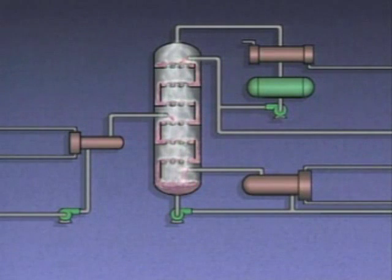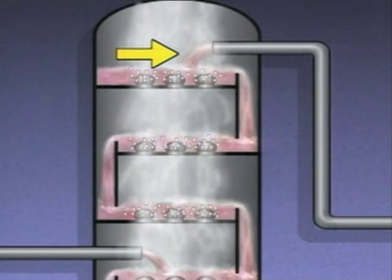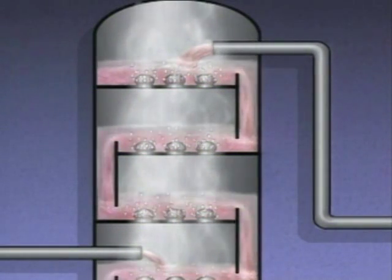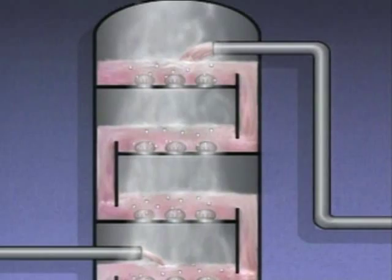While excessive liquid flow from a higher than normal feed rate is one cause of flooding, there are other causes. For example, a higher than normal reflux rate can have the same basic effect. Reflux is condensed overhead product that's pumped back to the top of a column. If there's too much reflux, the level of liquid on the trays can rise, increasing the hydrostatic pressure of the liquid and restricting or blocking the rising vapor.